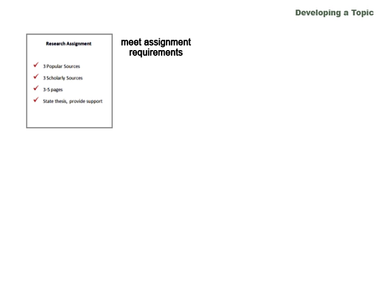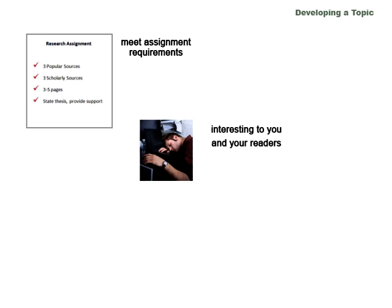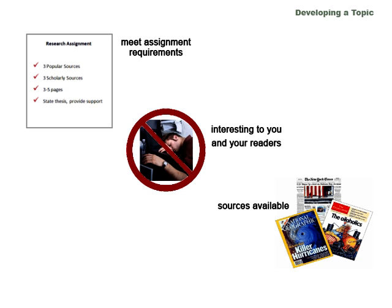Let's talk about some basic goals to keep in mind when you're coming up with a topic to write about. First, make sure that the paper you write meets all of your assignment requirements — read your assignment closely. Next, choose a topic that's interesting to you and would be interesting to others reading your paper. When you choose a topic that you're interested in, you do better research, which will make your life a lot easier. Finally, make sure that you choose a topic that other people have written about. Ask yourself: is my topic something that other people might have studied and published articles about? Thinking about your topic from the point of view of others will also make your research and your life a lot easier.